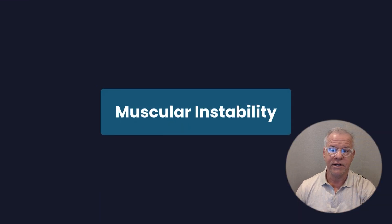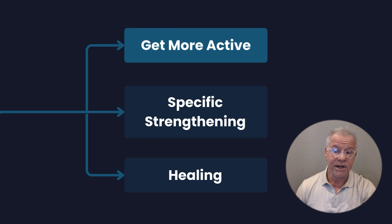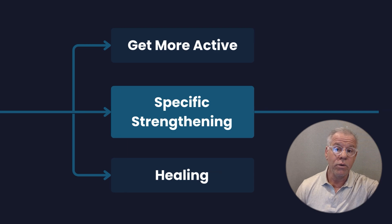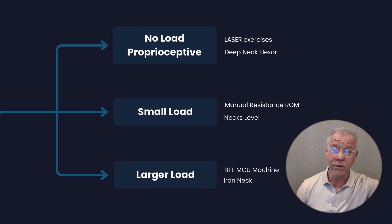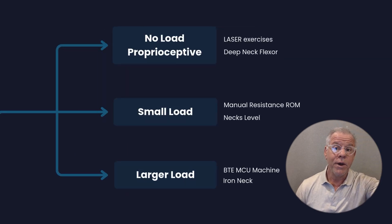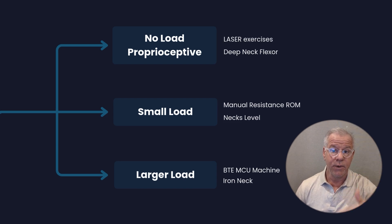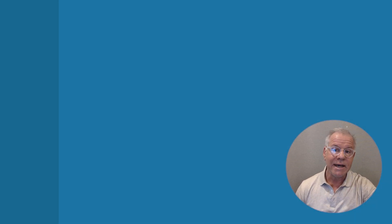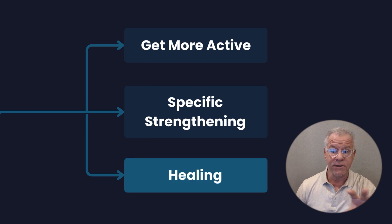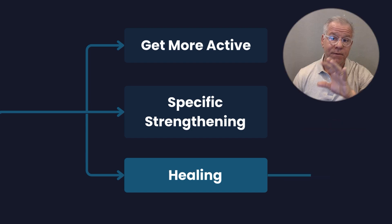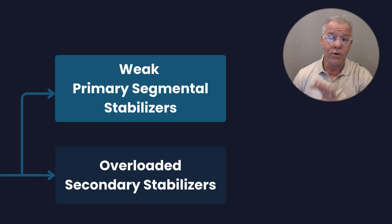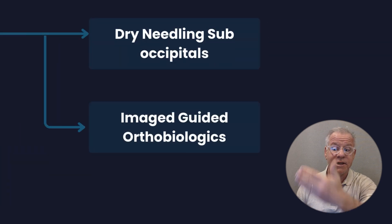As far as muscular instability is concerned, you can try to get more active and see if that works. If it doesn't work, then you can go through specific strengthening — initially with no load at a very low level, things like laser exercises. Or you can add a little bit of load eventually, building up to manual resistance with range of motion. There are devices you can use at home, or you can build up to larger load. Sometimes you need to heal muscles and tendons that have been damaged through the years.